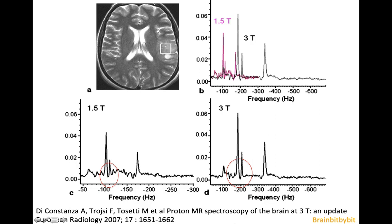At higher field strength, the chemical shift contributes to better separation of the different peaks. You can see that choline and creatine are better separated at 3 tesla than at 1.5 tesla — it never reaches zero but it dips deeper.